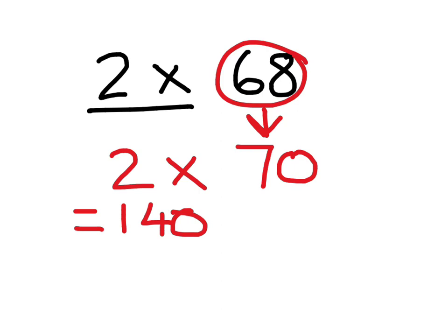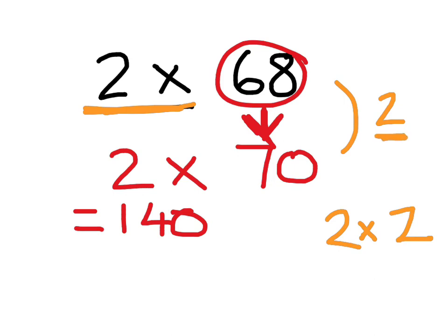But we know that's not our answer because in actual fact we were asked 2 times 68. So we can't leave it there. We did give 2 to 68 to make it 70. Now we have to take it away. We know that the difference is 2. We added 2 to 68 to make 70. So what we have to do then is work out 2 times, because that's what we are doing. The difference which is 2 comes from up here. 2 times 2 is 4. So then what we can do is 140 take away 4. And it will give us our answer of 136.